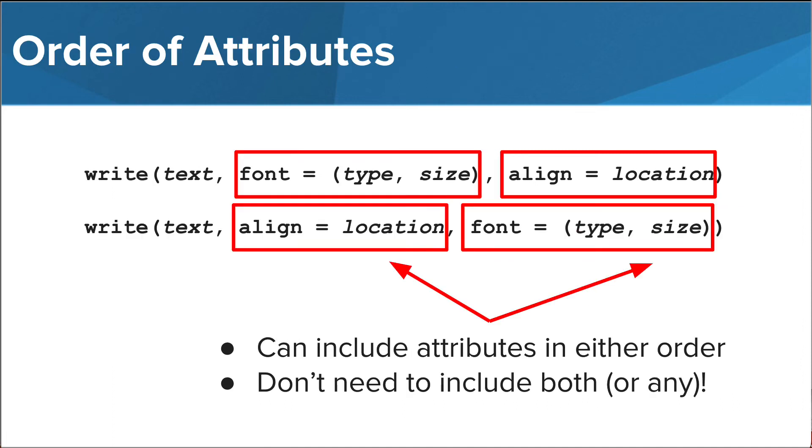An important thing to note is that the attributes of font and align are optional and can be called in any order inside our write function. Though we need to add the text to print as the first parameter, we can choose to add whichever additional parameters we'd like and can place them in either order.